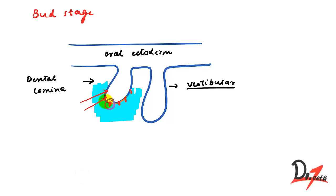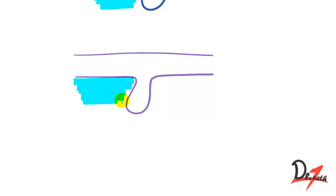So if this is the point, let's say it has proliferated downward and now it will look something like this. We have this ectomesenchyme.